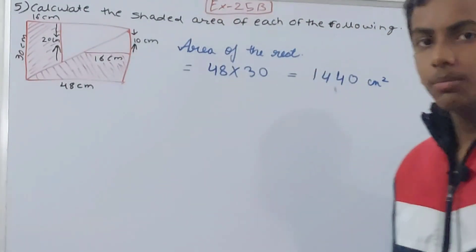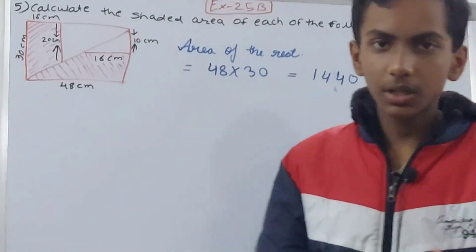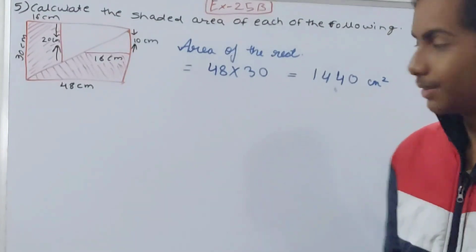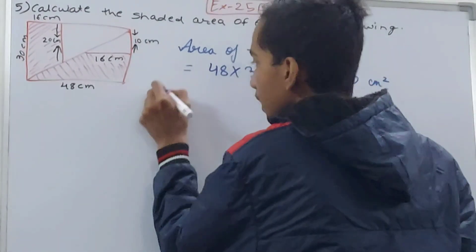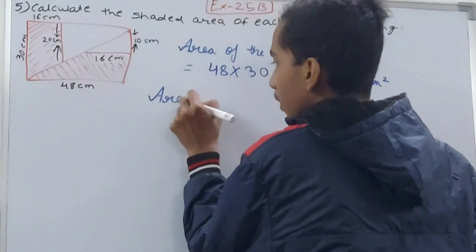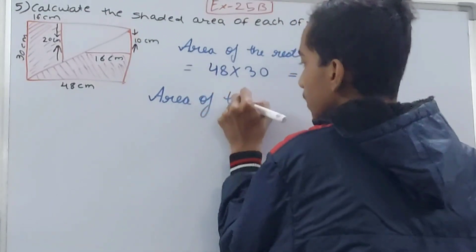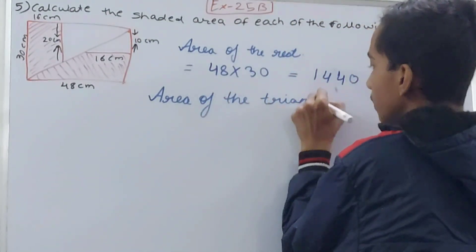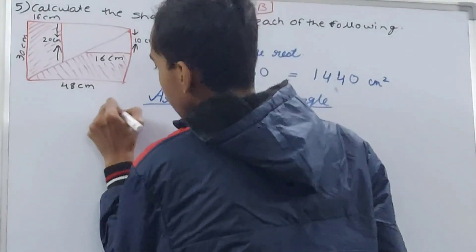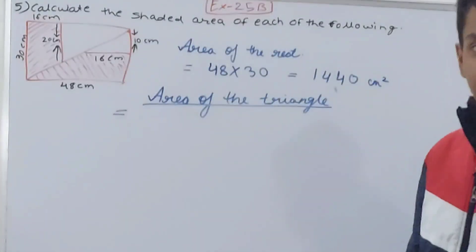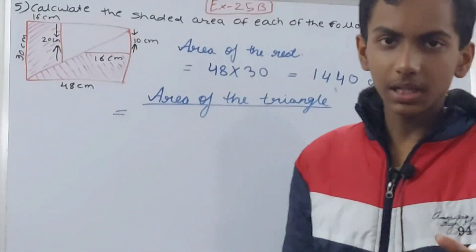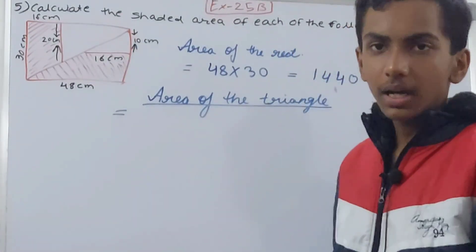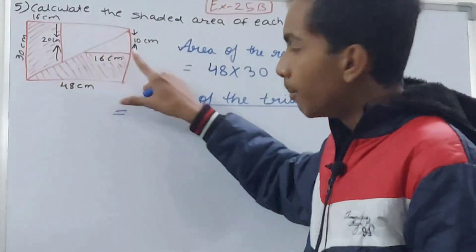From the rectangle's area we have to subtract the areas of the two triangles. We will calculate the areas of both triangles separately and then add them together.